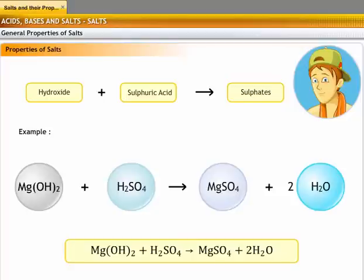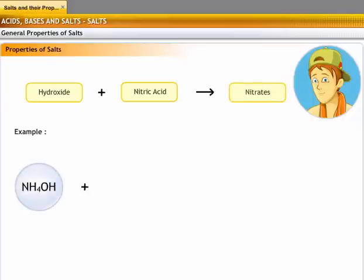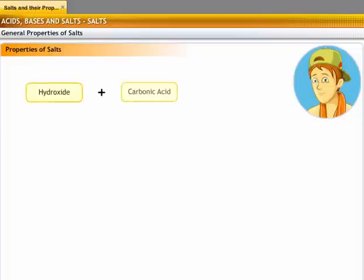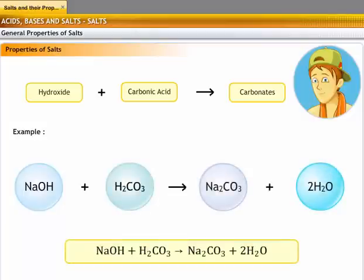Accordingly, salts formed from any hydroxide and nitric acid are known as nitrates. Ammonium hydroxide reacts with nitric acid to form the salt ammonium nitrate. Likewise, salts formed from any hydroxide and carbonic acid are carbonates. Sodium hydroxide reacts with carbonic acid to form the salt sodium carbonate.